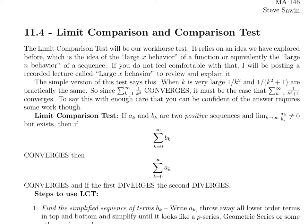We're going to do the limit comparison test and the comparison test today. The limit comparison test is going to be a really big deal. Think about when you add up 1 over 2 to the k — the individual terms, 1 half, a quarter, an eighth, a sixteenth — are getting small so fast that even adding infinitely many of them gives you a finite number. That's what convergence means.